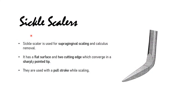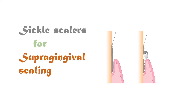The sickle scaler is used for supra-gingival scaling and calculus removal. It has a flat surface and two cutting edges that converge in a sharply pointed tip. They are used with a pull stroke while scaling. This picture shows a sickle scaler used for supra-gingival scaling - that is, scaling done above the gingival level. The sickle scaler is best for supra-gingival scaling.